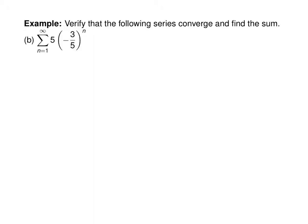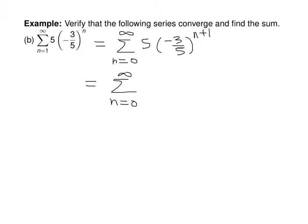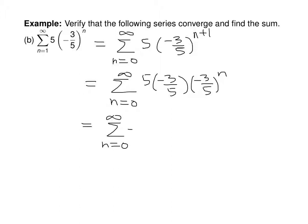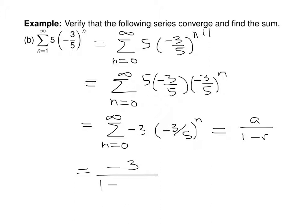The next series is a bit more tricky because it begins at n equals 1, but because the absolute value of 3 fifths is between 0 and 1, this series will converge. First let's change our indices to a sum from n equals 0 to infinity of 5 times negative 3 fifths to the power of n plus 1. Peeling off a negative 3 fifths gives us the sum from n equals 0 to infinity of negative 3 times negative 3 fifths to the n, which equals a over 1 minus r: negative 3 over 1 plus 3 fifths, or negative 3 divided by 8 fifths, which is negative 15 eighths.